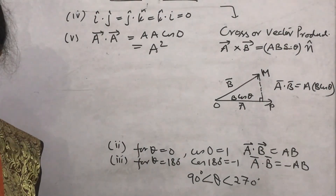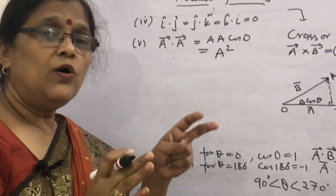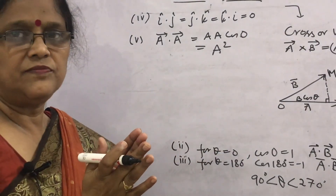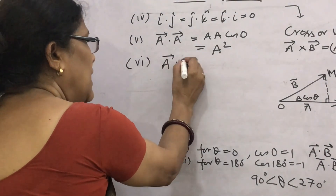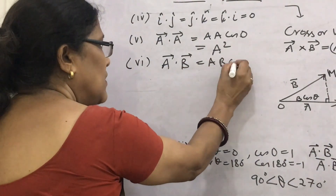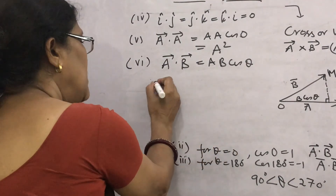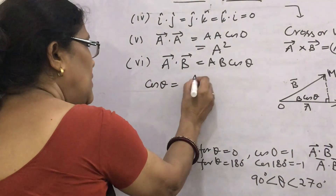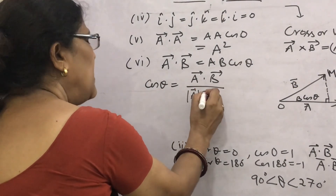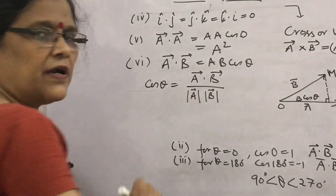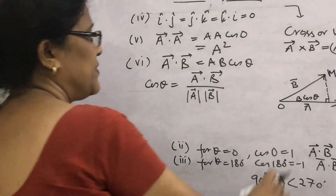Why should we learn dot product? Because it is applied to find the angle between two vectors. Since a·b = ab cosθ, to determine the angle between a and b: cosθ = (a·b) / (|a| × |b|), where |a| and |b| are the magnitudes of the two vectors. So to find the angle between two vectors, we use the dot product.